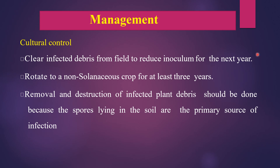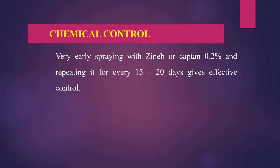For chemical control, early spraying with Zineb or Captan at 0.2% concentration, repeated every 15 to 20 days, gives effective control of early blight of tomato. By this method, we can effectively control early blight of tomato. Thank you.